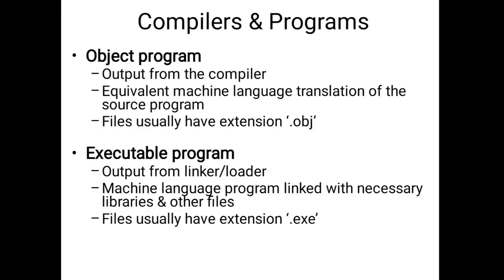The output from the compiler is called the object program. Once you have written instructions in your computer, the compiler produces an equivalent machine language translation of the source program. Object files usually have the extension .obj. An executable program is the output from a linker and loader, which links statements and instructions in the compiled code to produce your final output.